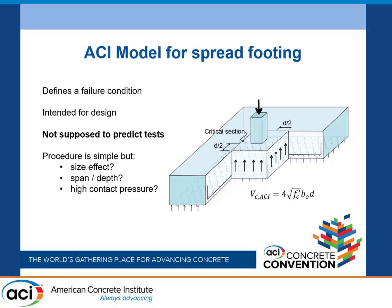Now you're very familiar with the ACI way of doing a punching shear and it's really no different in footings, but it's always good to remember that this was never intended to be a way of predicting test results. This was always intended to be a design procedure, and it means that you've already dealt with protection. I think that's an important thing to put up front because we usually beat up the ACI code quite a bit and it's not really fair.